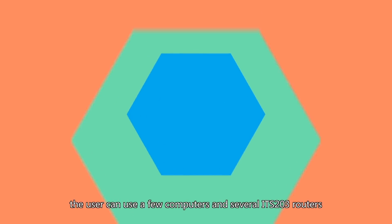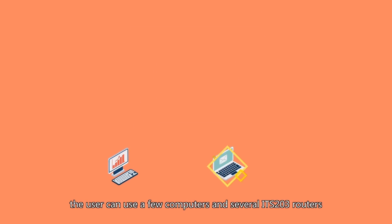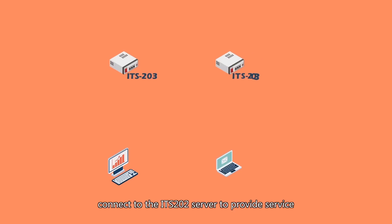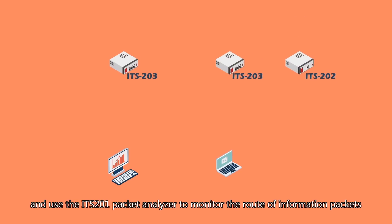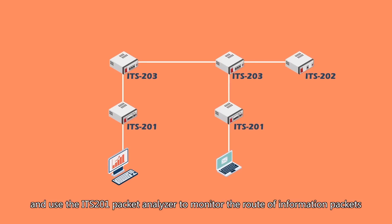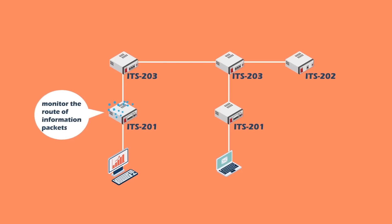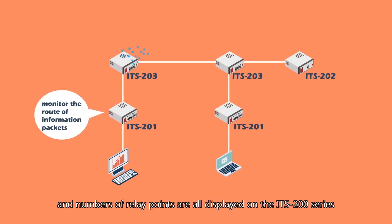In the laboratory, the user can use a few computers and several ITS203 routers to set up a local area network, connect to the ITS202 server to provide service, and use the ITS201 packet analyzer to monitor the route of information packets from its point of origin all the way to its destination. Such routes selected and numbers of relay points are all displayed on the ITS200 series.